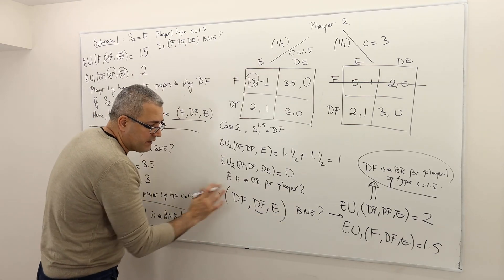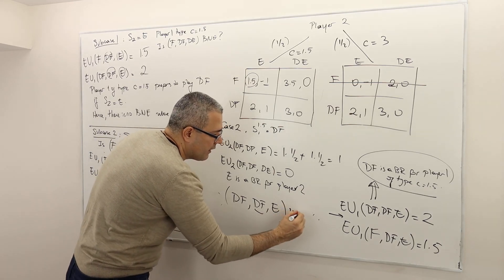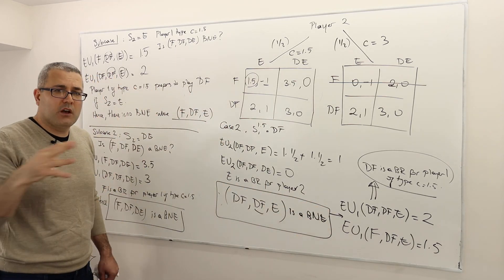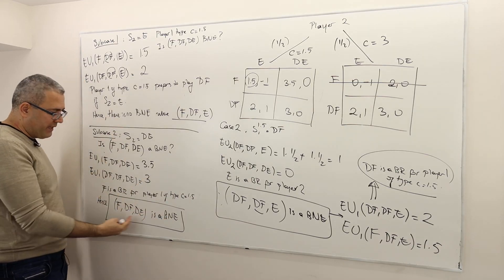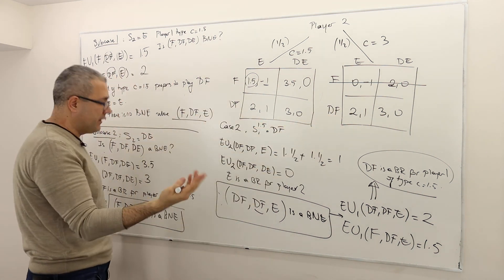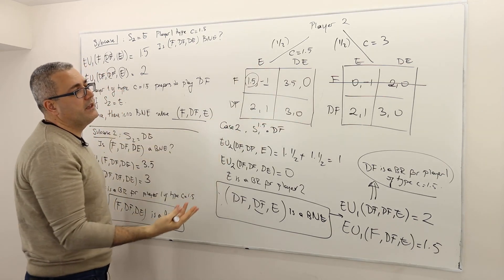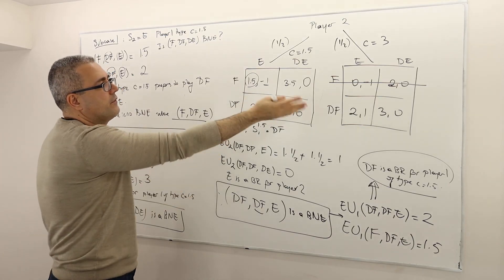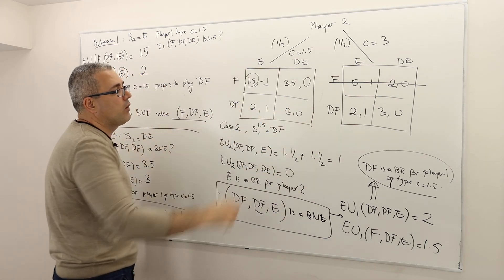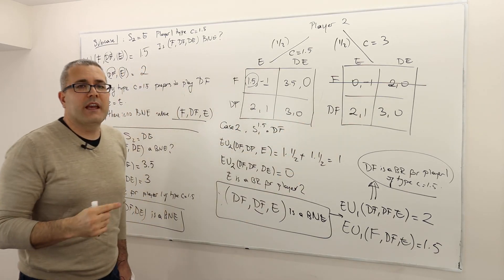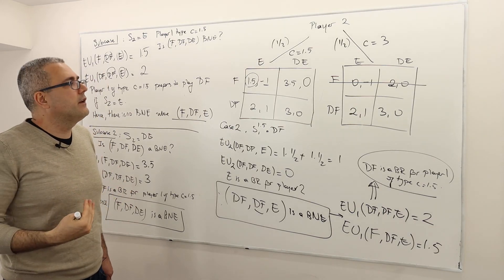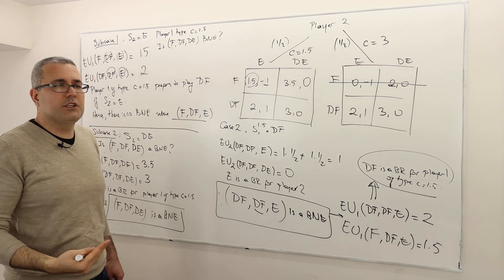Hence, this is a Bayesian-Nash equilibrium. So what does that mean? That means we had two exhaustive cases. Under case 1, I found one Bayesian-Nash equilibrium: F, DF, DE — so player 1 type 1.5 plays F, player 1 type 3 plays DF, and player 2 plays DE. That means player 2 gets 0 payoff regardless of what game is realized. Another Bayesian-Nash equilibrium is DF here, DF here, and player 2 plays E — so player 2 gets payoff of 1. Both of those are Bayesian-Nash equilibria of this game.